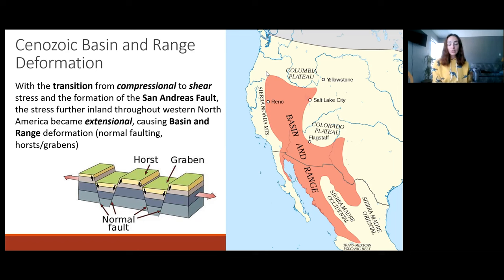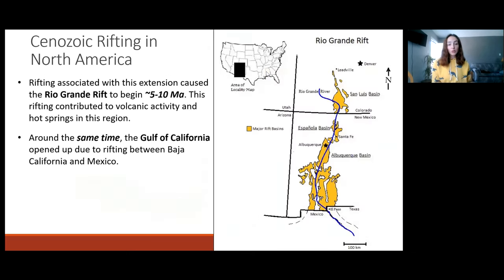Along with the extension during this time and in this area, we also had rifting occur in North America. However, these two specific instances I'll be talking about were much later. The Rio Grande Rift began around 5 to 10 million years ago, and this rifting is shown in the right picture where we have the yellow blobs and the Rio Grande River in the Rift Valley. We also had, around the same time, the rifting between Baja California and Mexico, causing the Gulf of California to open up, which is shown here.